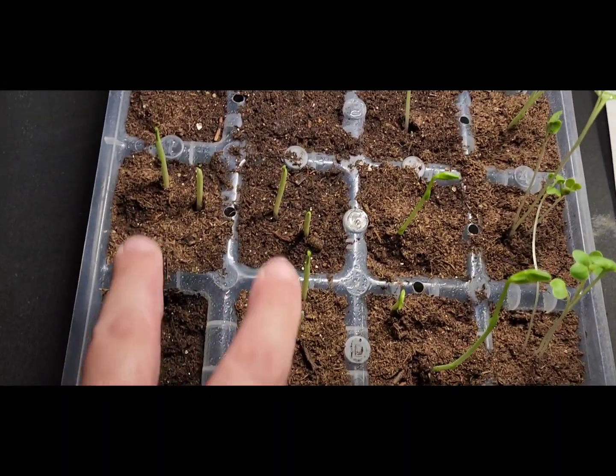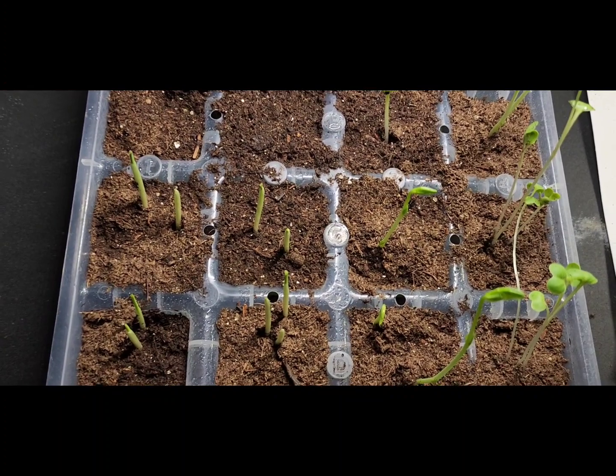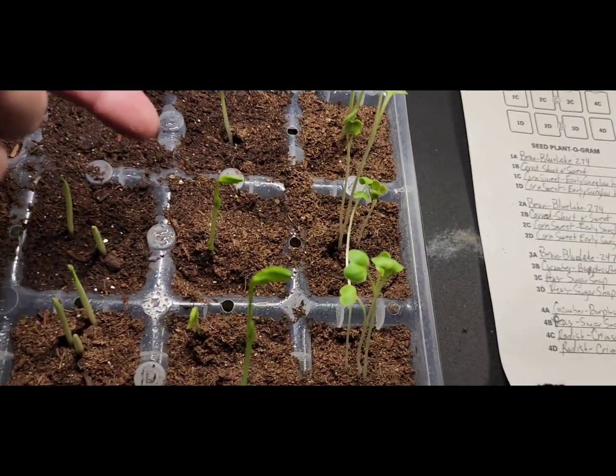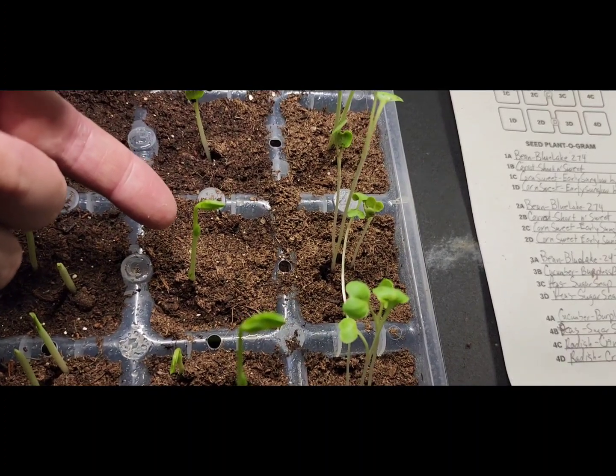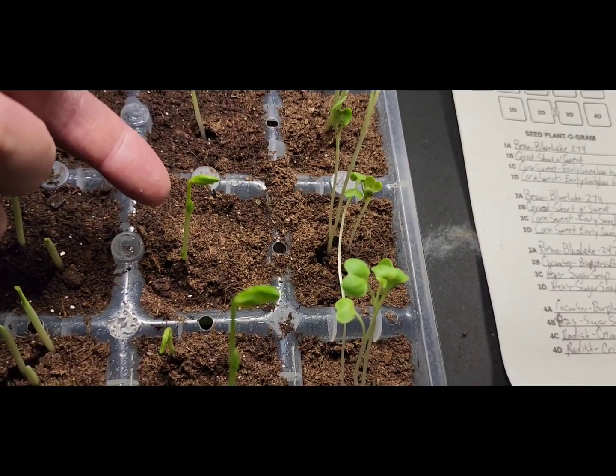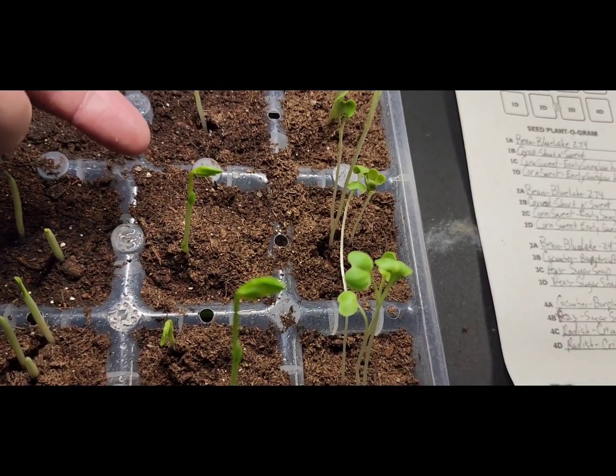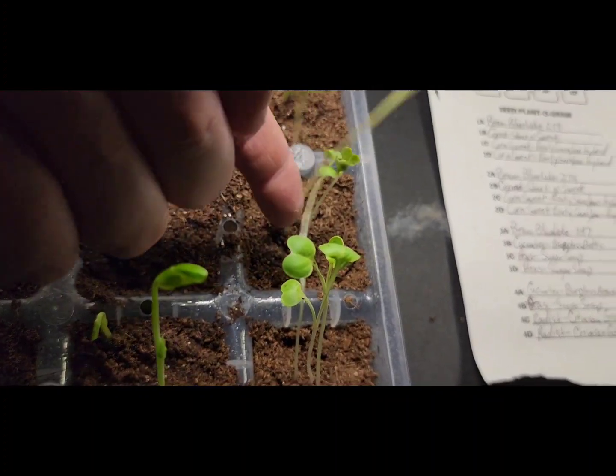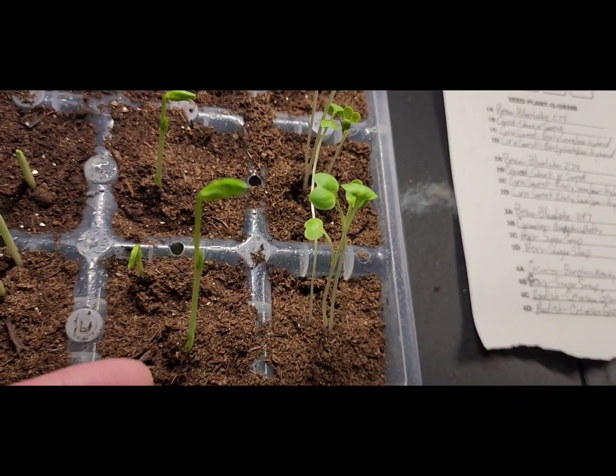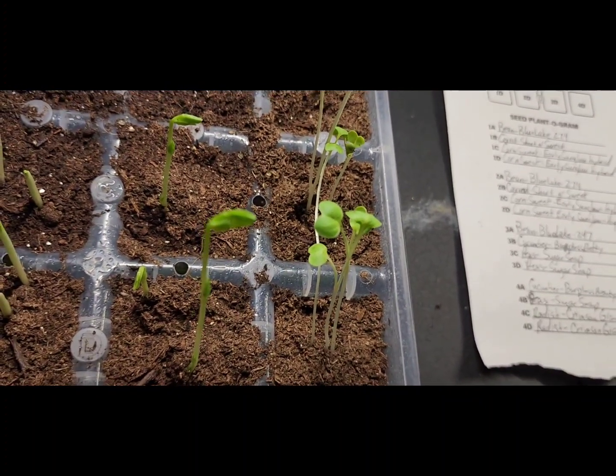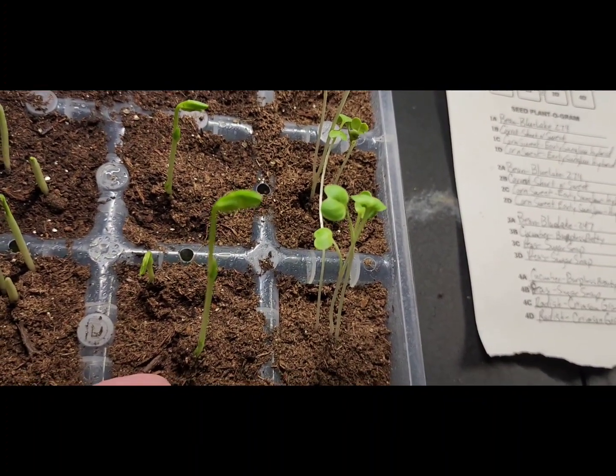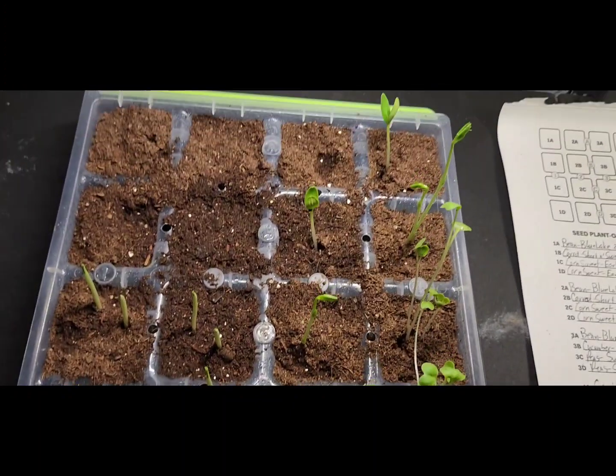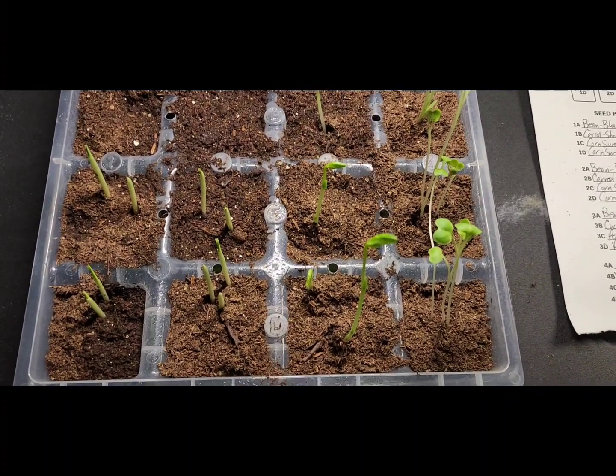All these are our sweet corn, so those are looking pretty good. Then let's go back here to 3c, we got sugar snap peas, and then 4c is a radish. Then 3d is sugar snap peas and 4d is radish. Yeah, you know, we're making some progress.